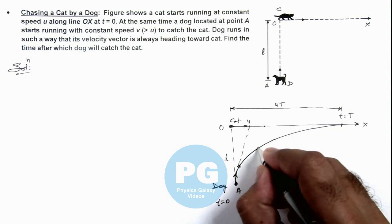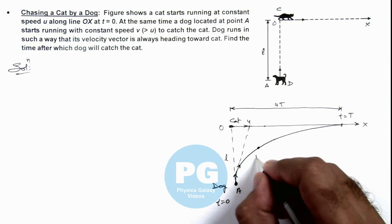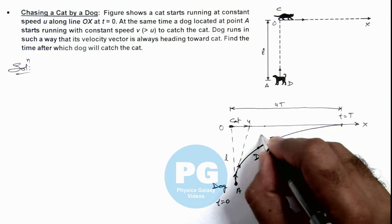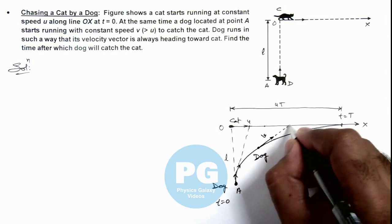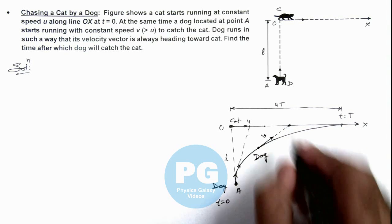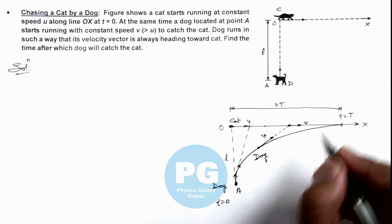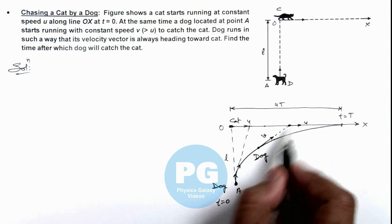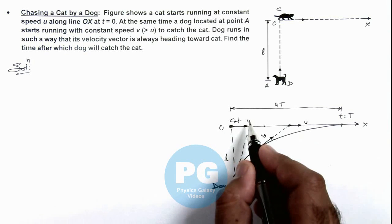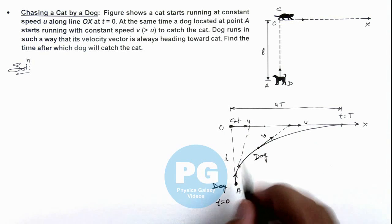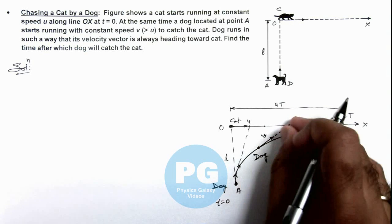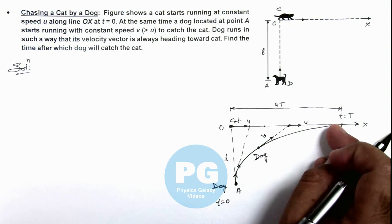And at any point if we consider the position of dog, it is moving in such a way that its velocity vector is heading directly towards the instantaneous position of this cat which is moving at a speed u. Here if we analyze the situation in the reference frame of cat we can see if cat is considered to be at rest, the dog is located at a distance l and this l is continuously decreasing and finally it'll decrease to zero at time t.